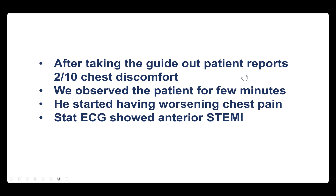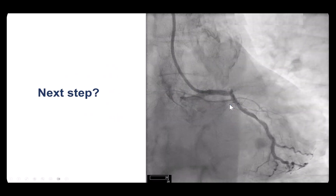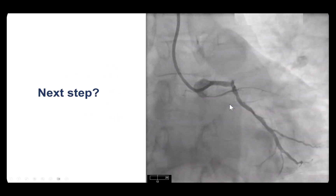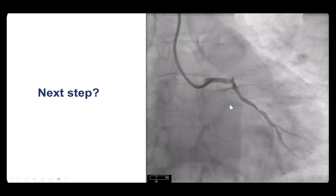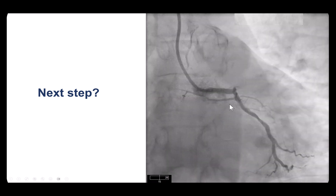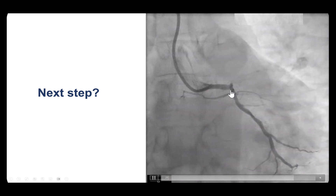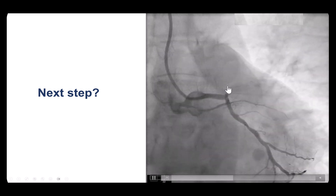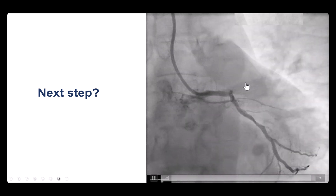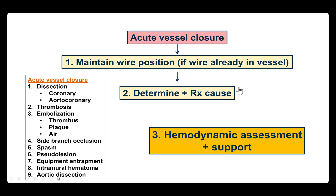The wire was pulled after good flow was seen in the LAD. However, after removing the guide, the patient started having chest discomfort and ST-segment elevation. Repeat angiography was done emergently, and what we see is acute thrombosis of the recently placed stent. The thrombosis is at the ostium of the LAD, and as you can imagine, the patient is not tolerating this very well.